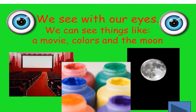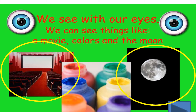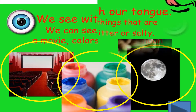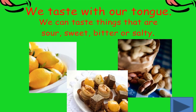Now we are going to talk about the sense of sight. We see with our eyes and we have two eyes. We can see things like movies, the moon, and colors. When we see, we can differentiate between colors like red, orange, and blue. Can you look around you and find out how many colors you see?